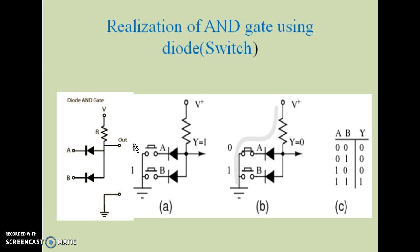Input A equal to one and B equal to one, the last condition. When A and B both are one, anode is already connected to VCC. Cathode is also connected to VCC. So the diode is reverse biased and it acts as open switch. No current flows and output is equal to one.